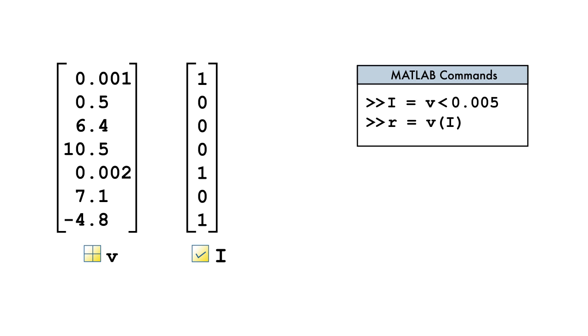MATLAB uses i to extract the elements of v corresponding to the locations where i is true. The result is a numerical array containing only the elements of v that satisfy the criterion.